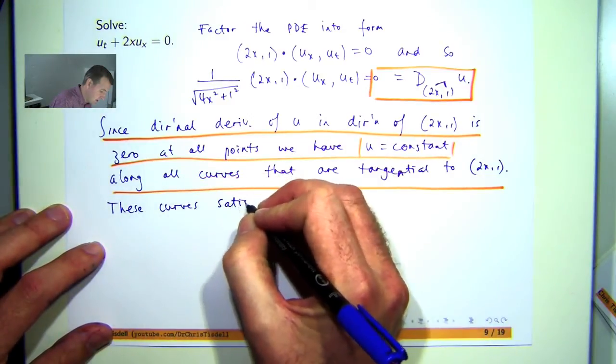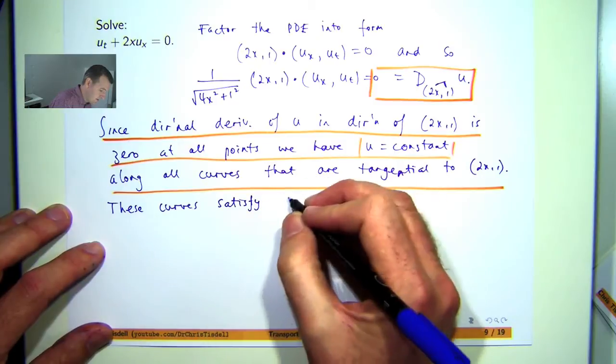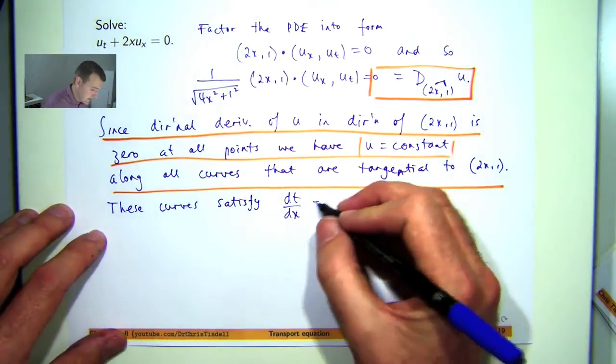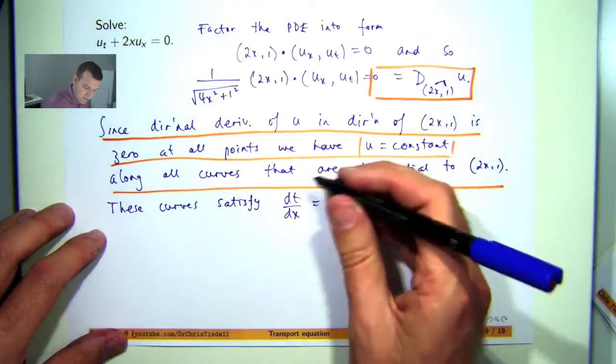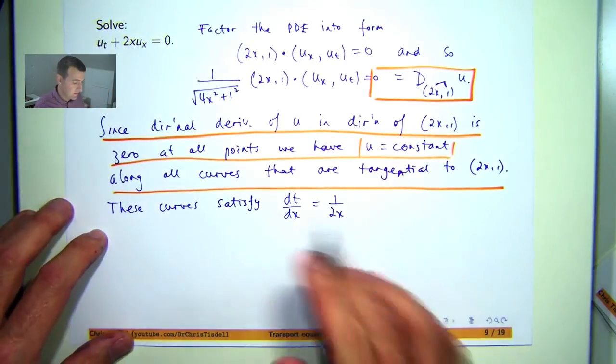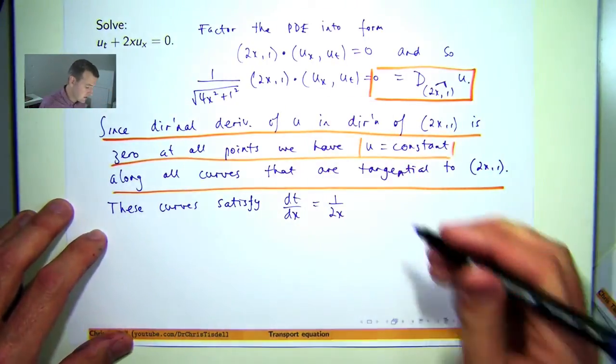These curves satisfy the following. So in the xt plane, it's just the ratio of the components of my vector, so dt/dx = 1/(2x). So I can shift that around and integrate it.